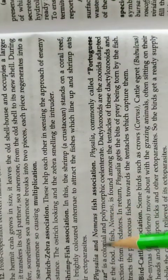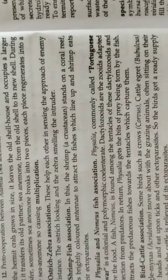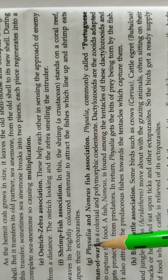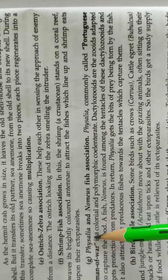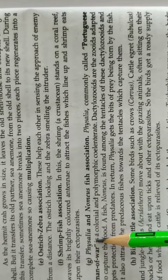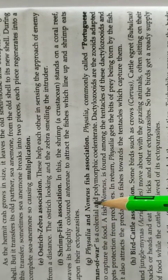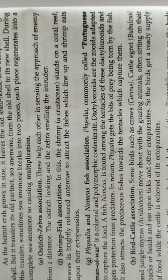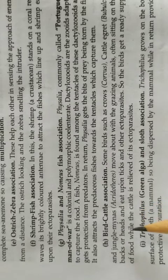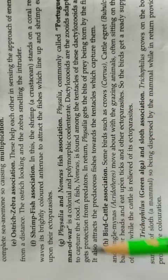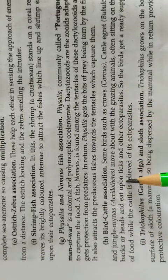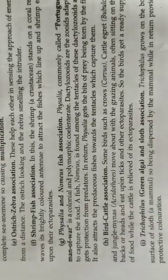Another example is the association between Physalia and Nomeus fish. Physalia is the Portuguese man-of-war, which you have seen in your first year. There is a Nomeus fish living with Physalia. Physalia has strong cnidarian stinging cells that protect the fish from different animals, while the fish helps attract prey for Physalia. Another association is between clownfish and sea anemone. The sea anemone protects the clownfish with its stinging cells, and when the clownfish eats food and drops bits of food, the sea anemone uses those food bits as well as the fecal material of the clownfish for its nourishment. This is proto-cooperation.